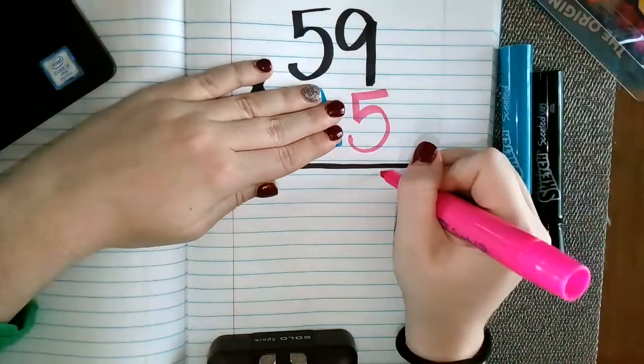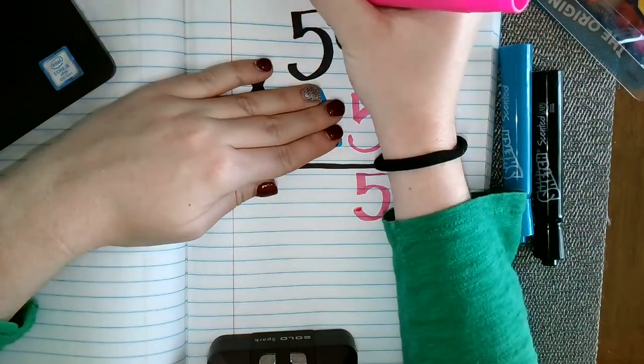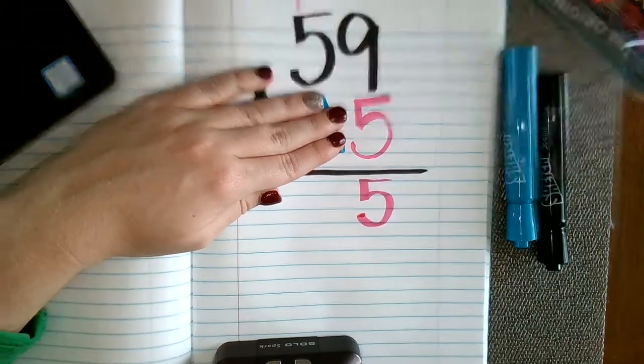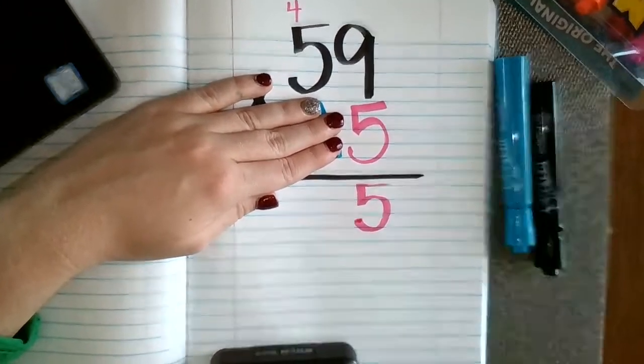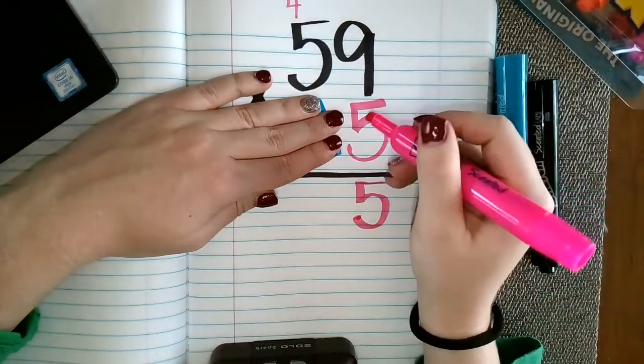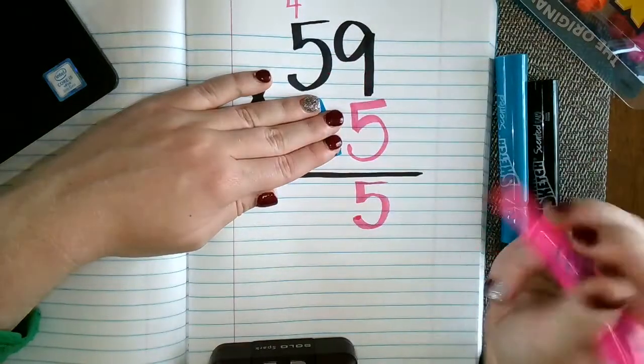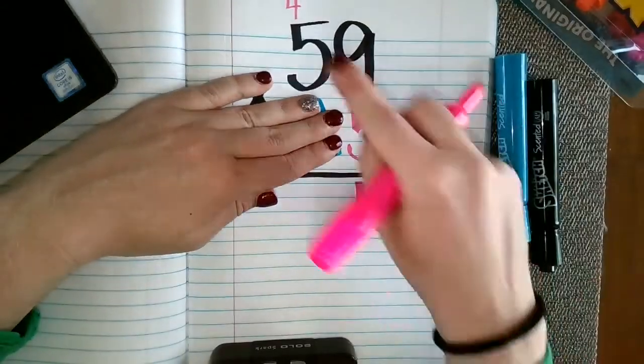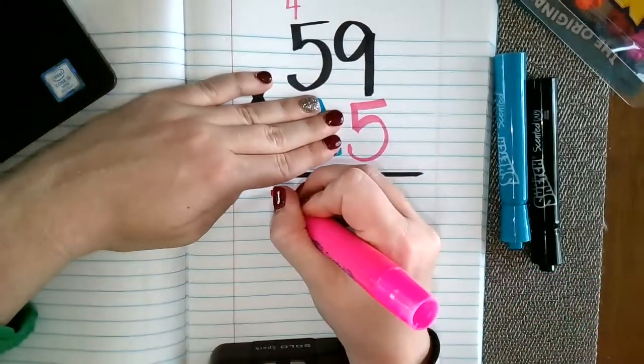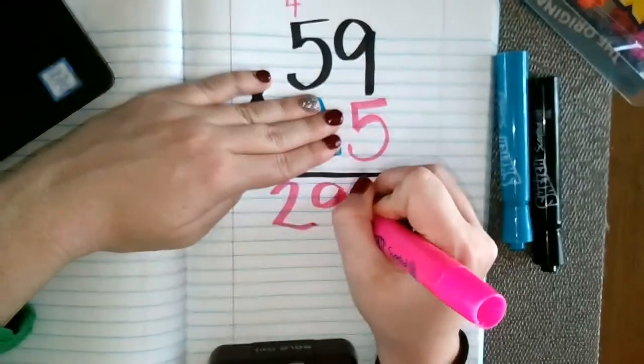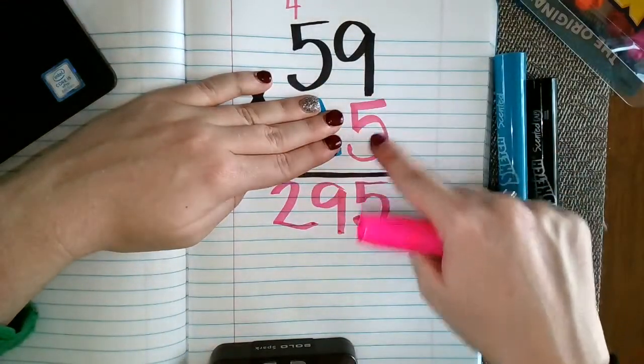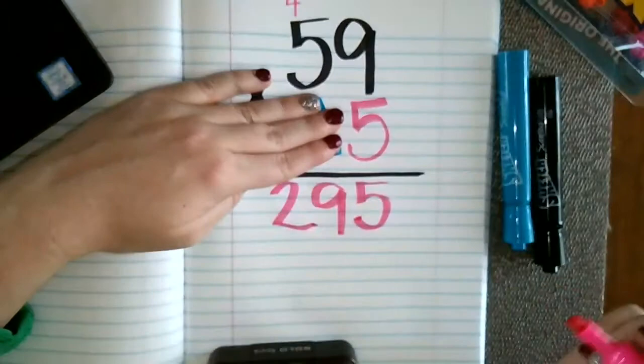So 5 times 9 is 45. So I'm going to write the 5 in the ones place and I'm going to carry that 4, which is really a value of 40, up above the 5. So now I'm going to do 5 times 5. 5 times 5 I know is 25. 25 plus 4 is 29. So in other words, 59 times 5 is 295.